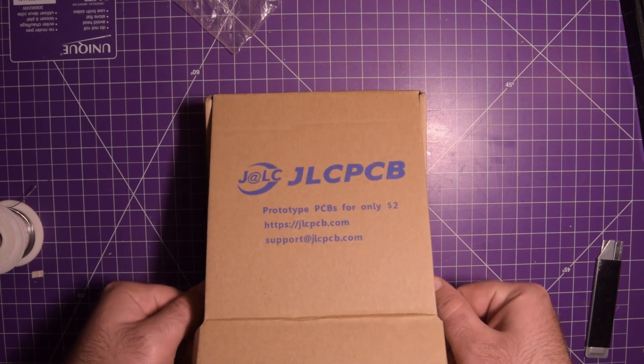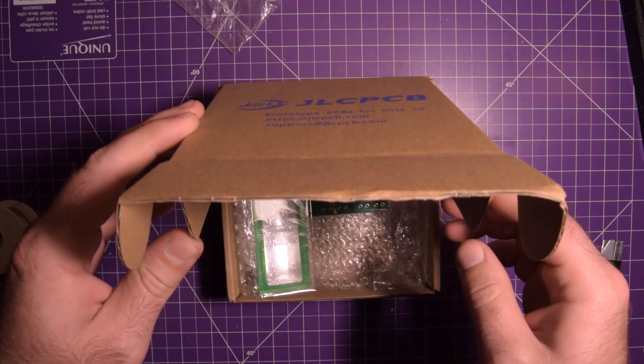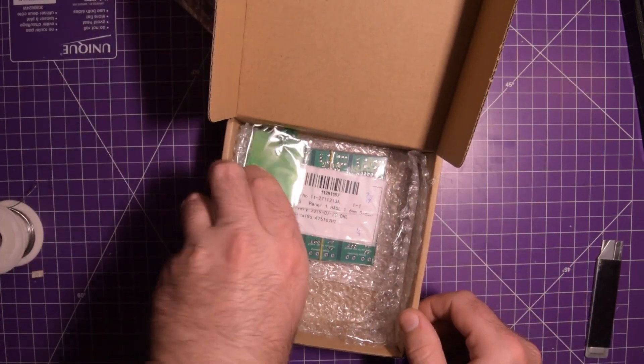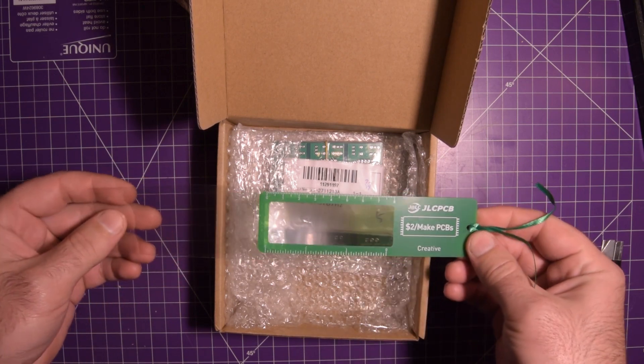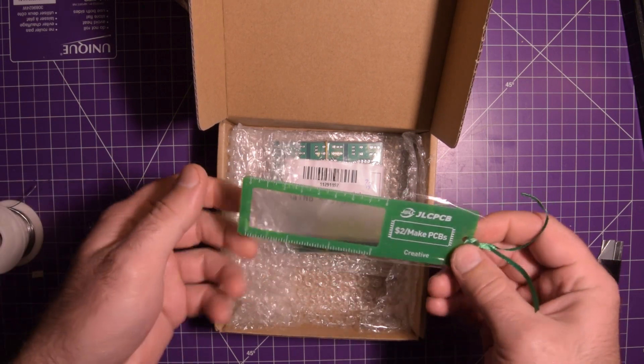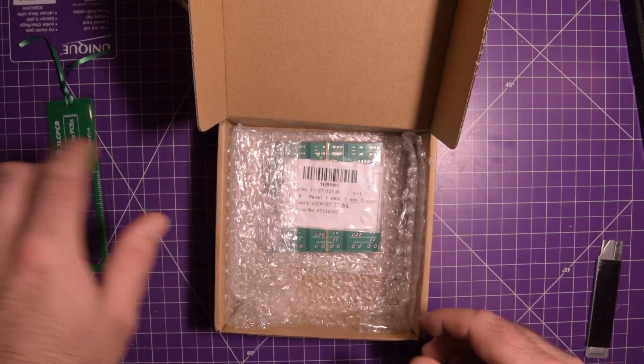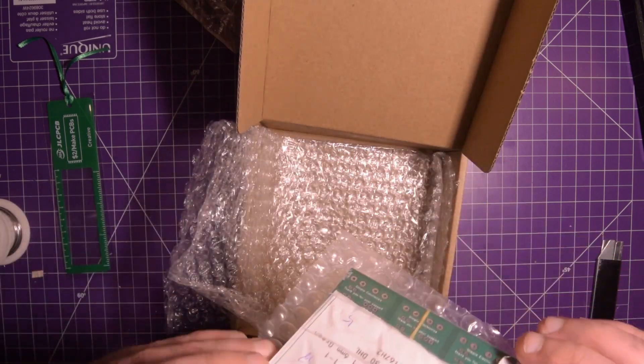This came really quick, about five business days I think after I ordered. Just look. Oh my God. So a nice JLC ruler with a Fresnel lens for looking up close. And here it is.